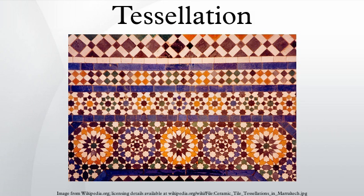In the geometry of higher dimensions, a space-filling or honeycomb is also called a tessellation of space. A real physical tessellation is a tiling made of materials such as cemented ceramic squares or hexagons. Such tilings may be decorative patterns, or may have functions such as providing durable and water-resistant pavement, floor or wall coverings.